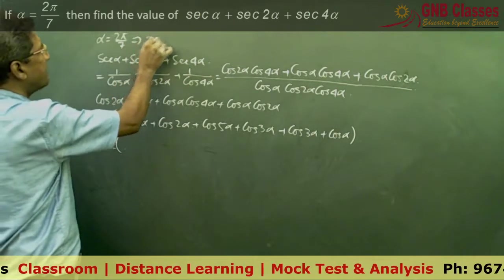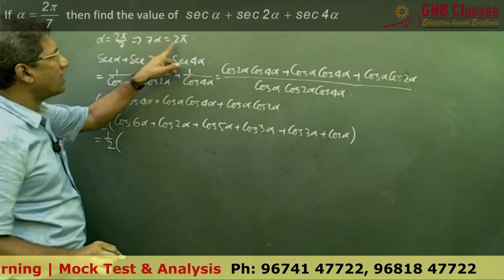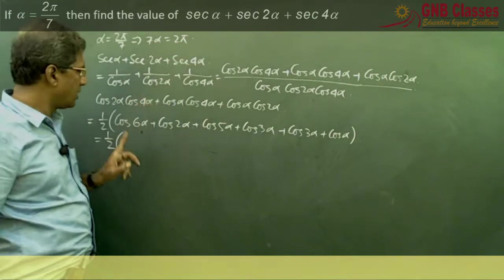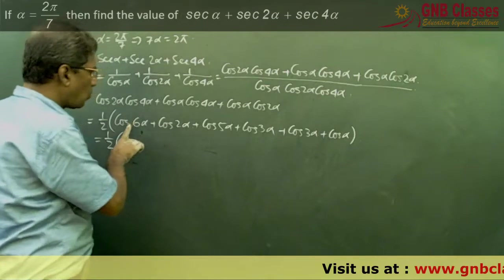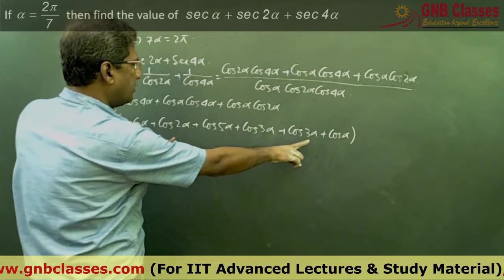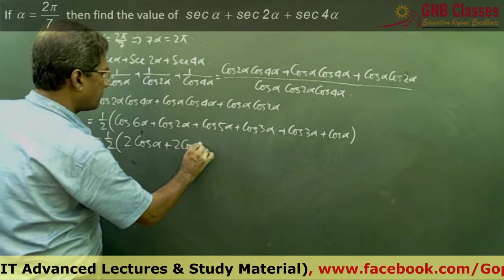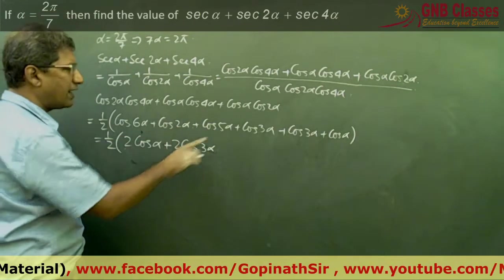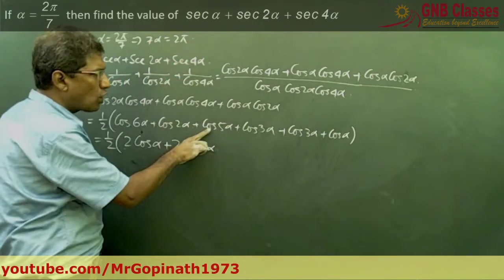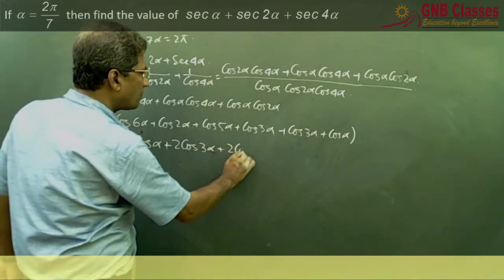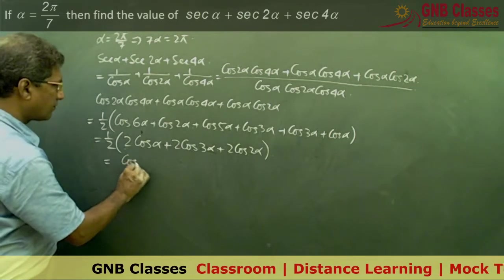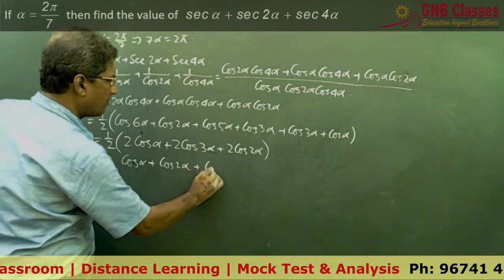Now cos 6α can be written as cos(2π − α), and cos(2π − α) = cos α. So cos α + cos α = 2 cos α. We also have cos 3α · cos 3α giving 2 cos 3α, and cos 5α · cos 2α. Now 5α = 2π − 2α, so cos(2π − 2α) = cos 2α. Taking 2 common outside, we get 2(cos α + cos 2α + cos 3α).